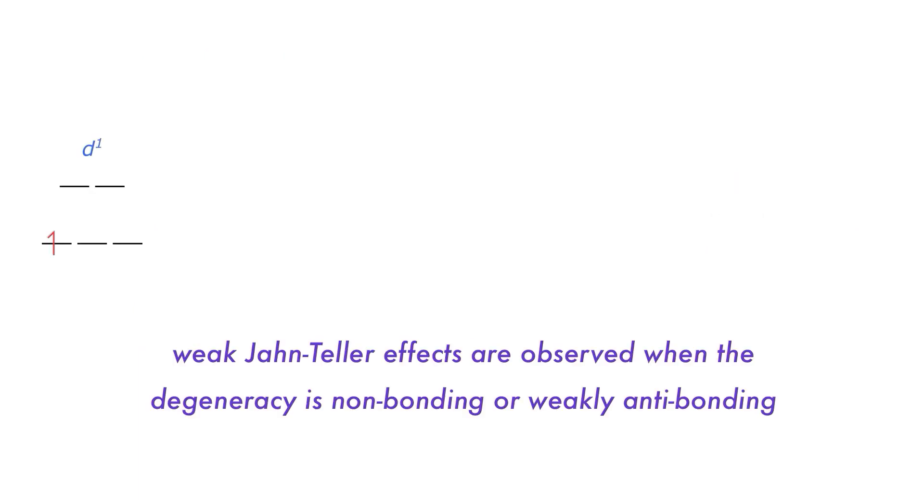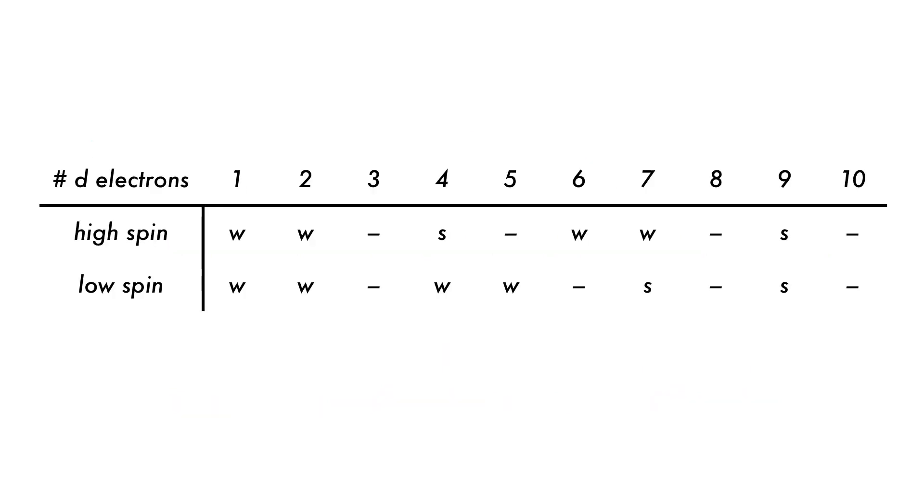There are also weak Jahn-Teller effects like the d1 where the degeneracy is in a non-bonding or weakly anti-bonding orbital, but these are usually non-bonding in the sigma only case, so observing the effect experimentally is difficult. Here is a summary table of the d electron configurations and their susceptibility to Jahn-Teller distortions.